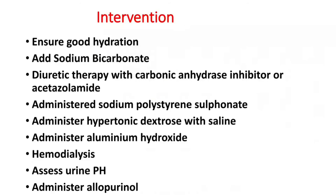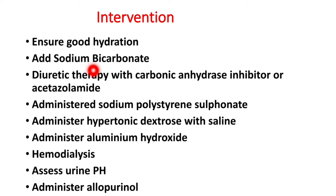Interventions: ensure that the patient is well hydrated before chemotherapy. Good hydration helps increase urine volume, which will eliminate uric acid and prevent kidney failure. Add sodium bicarbonate, which helps to alkalize the urine, thereby preventing kidney failure secondary to uric acid accumulation. Diuretic therapy with a carbonic anhydrase inhibitor such as acetazolamide also helps to alkalize urine and prevent kidney damage.